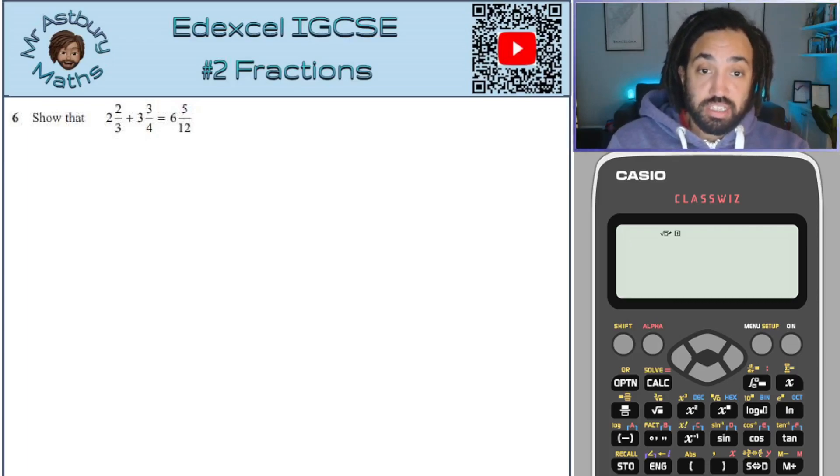First off, what you need to do is convert them into top-heavy fractions. So we want to see how many thirds 2⅔ is. Well, in two wholes, there are six-thirds. Add two more makes eight. So what we're doing there is we're just doing 3 multiplied by 2 is 6 and then add on 2 is 8.